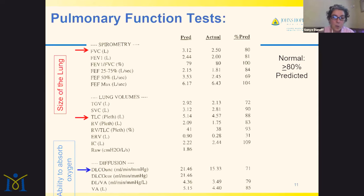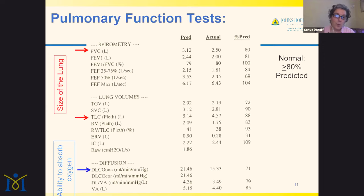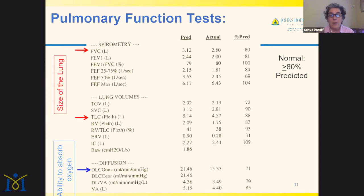On the results sheet, you'll see columns for predicted — determined by your age, height, and gender, based on norms from non-smokers — and actual, what you actually did. Then there's a percent of predicted. For a person who is 5'4", a 2.5-liter volume might be very good, but if you were 6'3", that would be fairly small. So these are normalized to your height and gender. Normal is anything greater than or equal to 80% predicted.